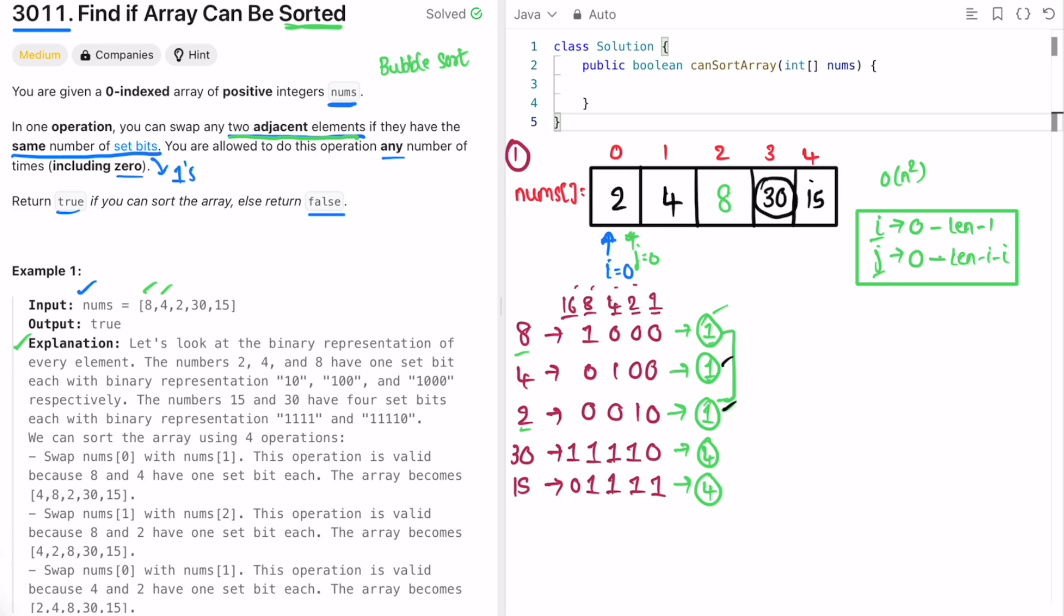Finally these two are also not in their position. So check if they have the same set bits. Both have same set bits of 4. We can swap them. So 15 and 30 will be swapped. And now we can see the entire array is sorted. Using these operations we can sort the array.